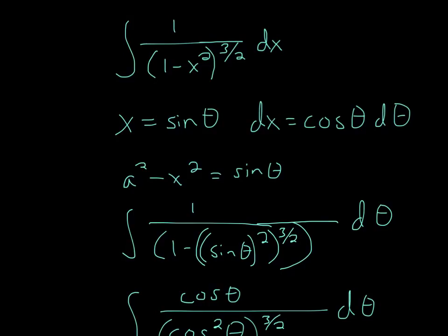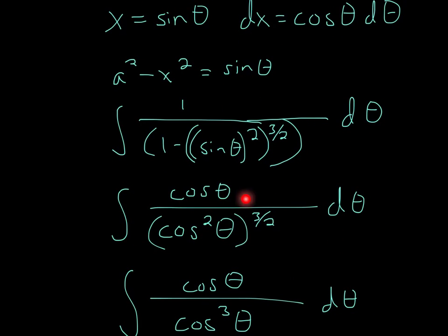Now, what I can do with this is plug in for x. Anytime I see x, I can plug in sine theta. So it'll be 1 over 1 minus, since it's x squared, I can plug in sine theta squared, and then to the 3 half power. And then since I need to replace dx, well, dx is equal to cosine theta d theta. So I can plug in cosine theta d theta.